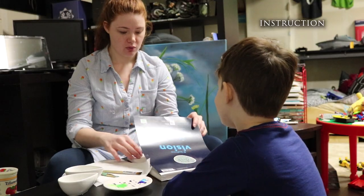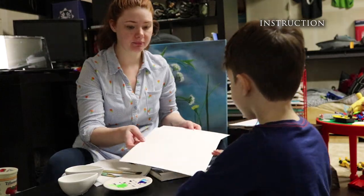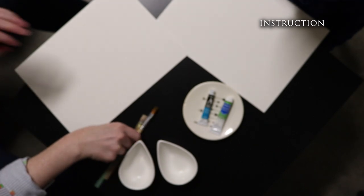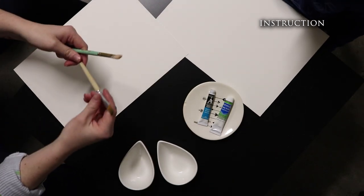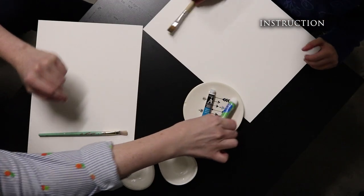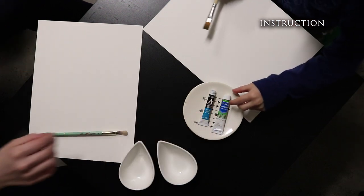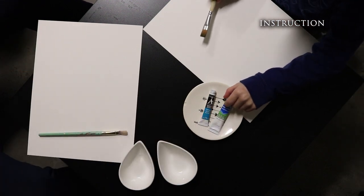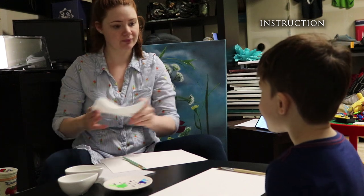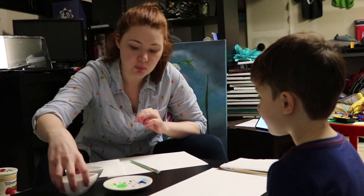So first we are going to need our watercolor paper. Then we will need some flat paint brushes. And we will be using tube paints. We'll need some paper towel and we'll need some water.